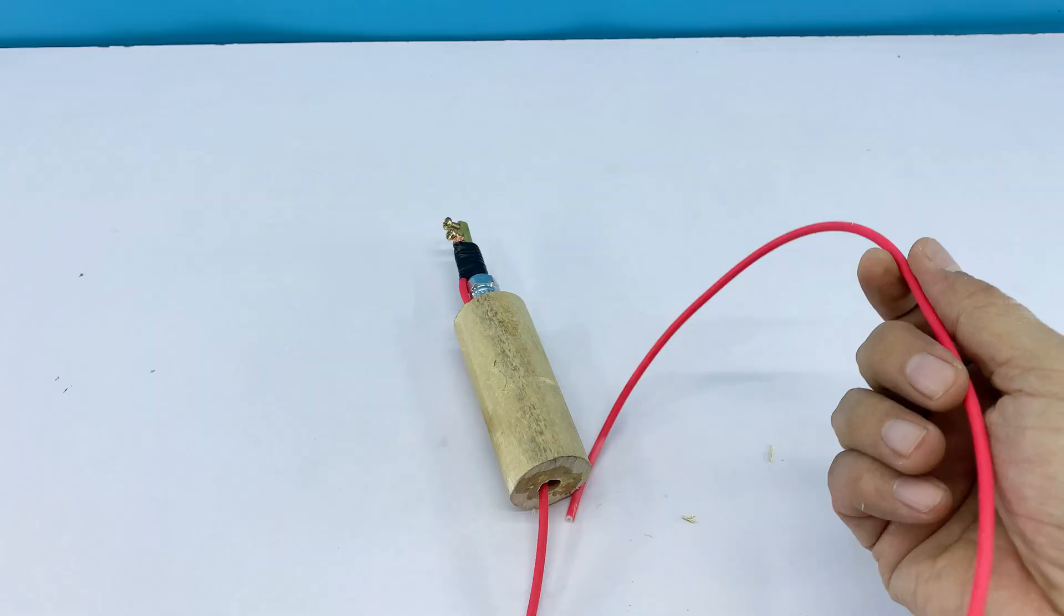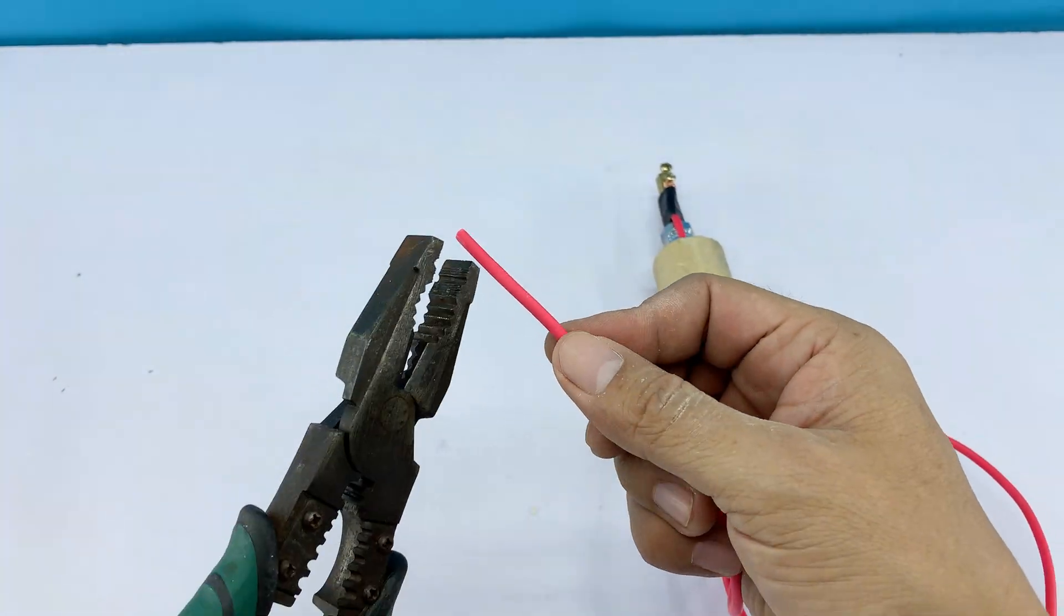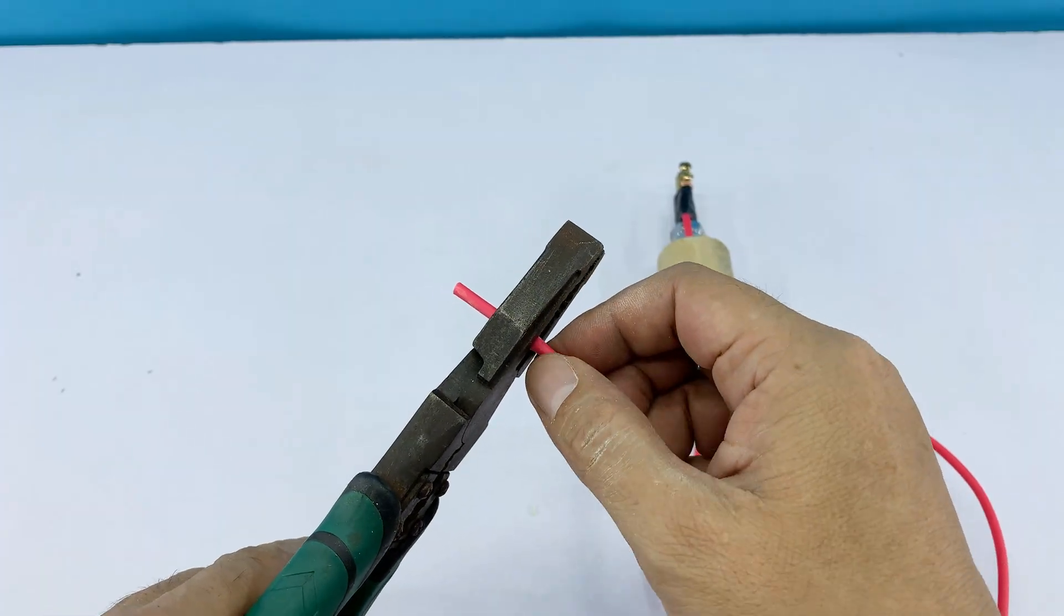With the other end of the wire, simply attach a crocodile clip. It makes connecting to the power source or contact point much easier.